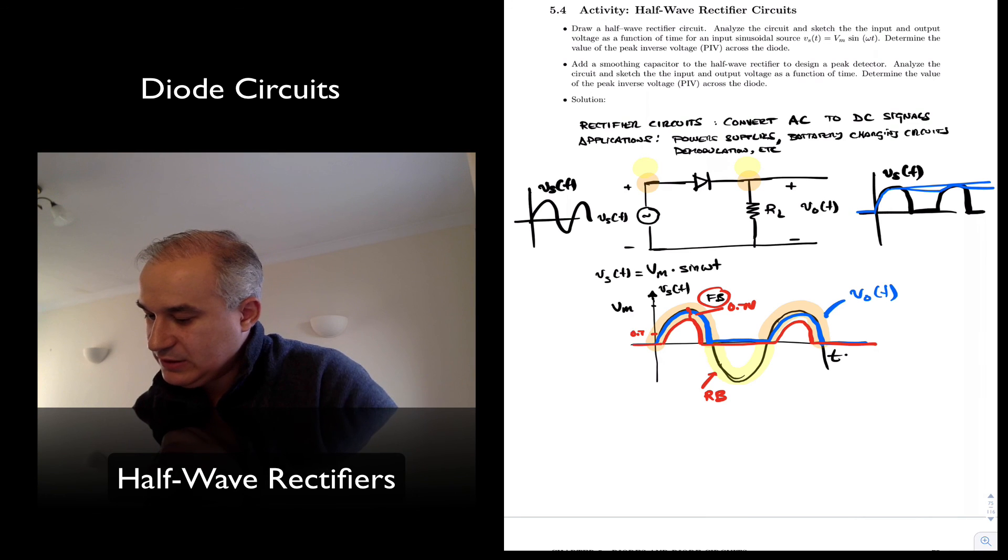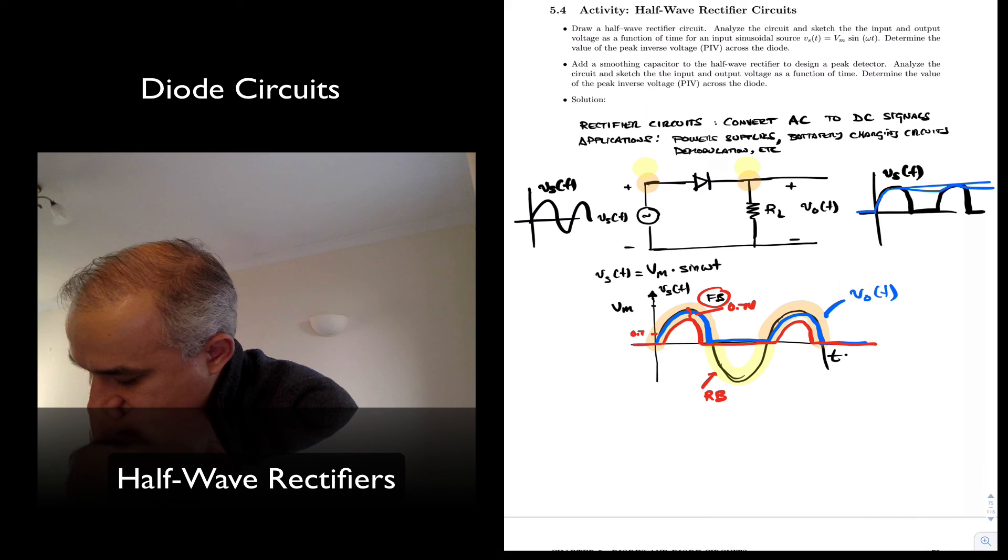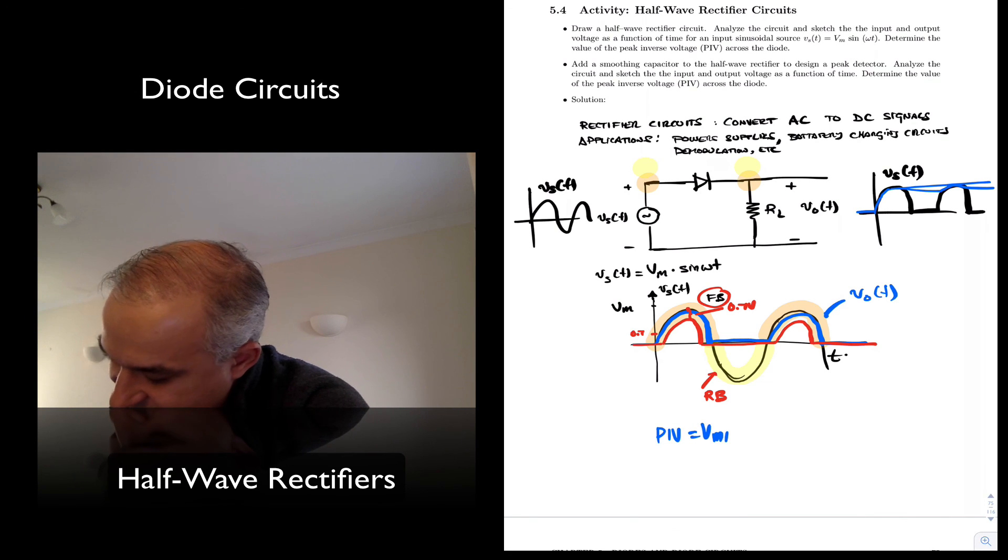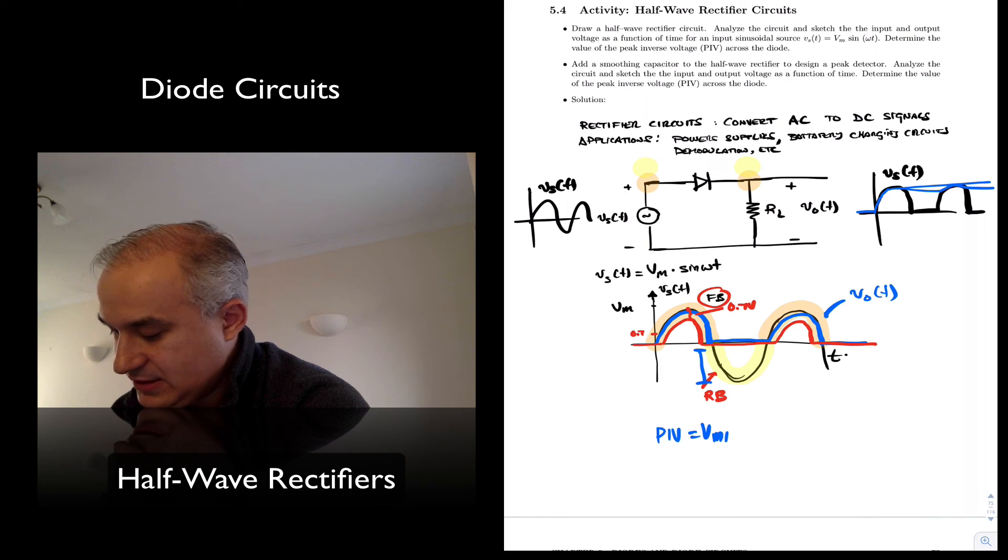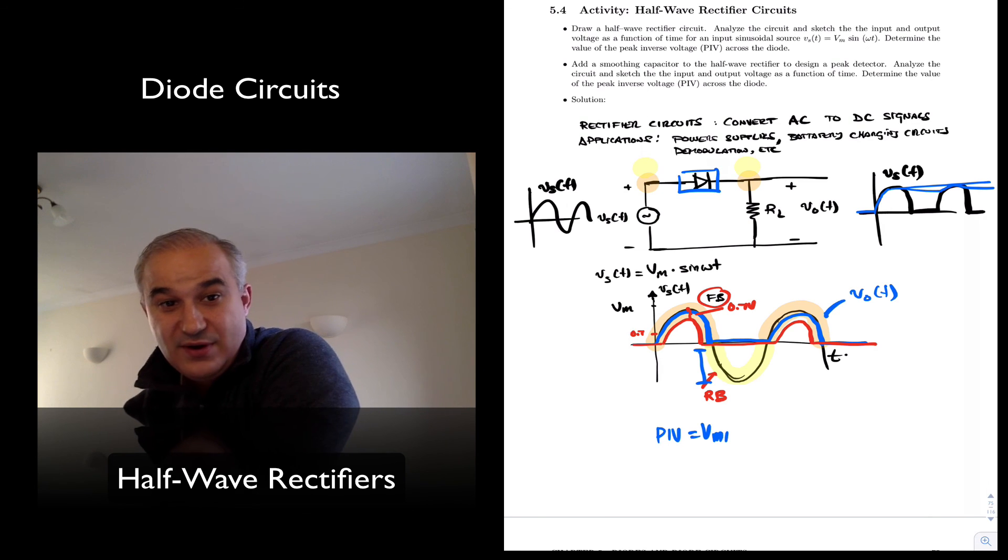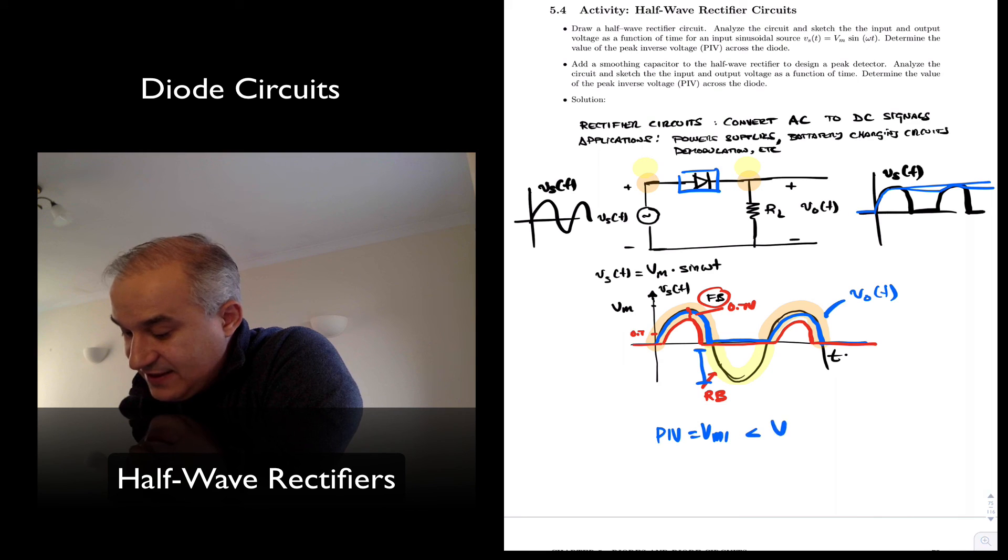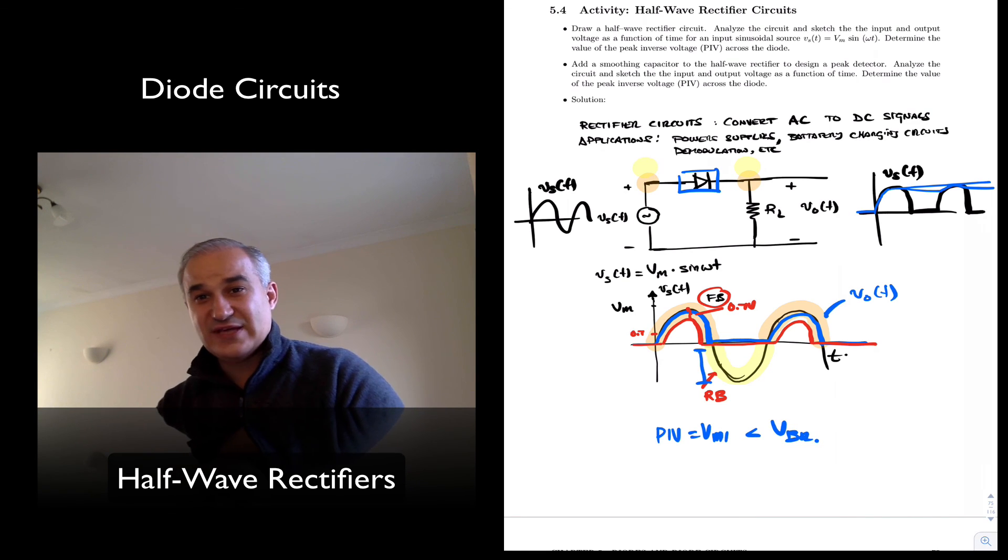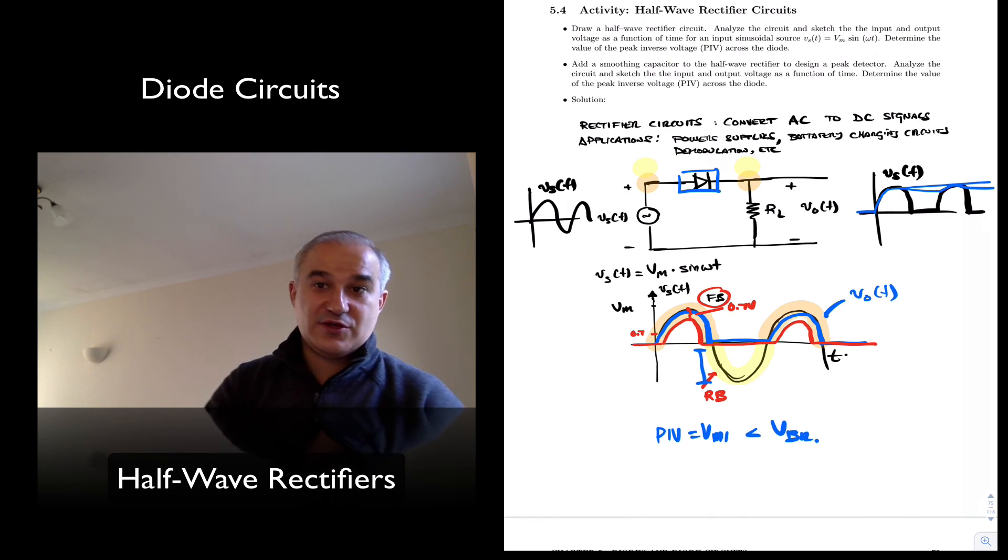Oh, that's so cool. Peak inverse voltage. The peak inverse voltage is equal to Vm. This is the maximum voltage that you have in the reverse bias, where the diode is operating in reverse bias. Remember that we need to make sure that it is less than the breakdown voltage of the diode. So the maximum reverse bias voltage needs to be less than the breakdown voltage. Thank you.